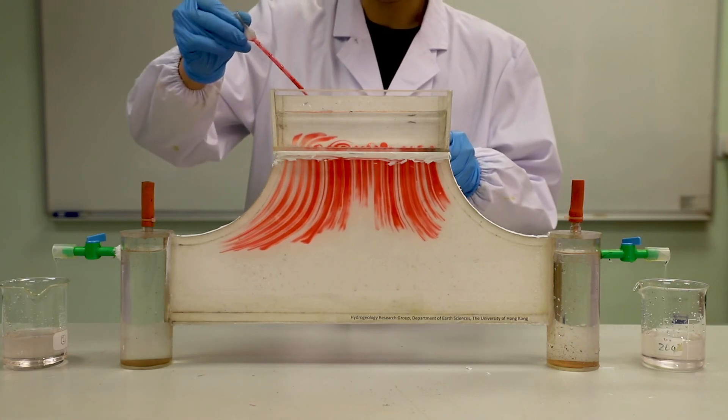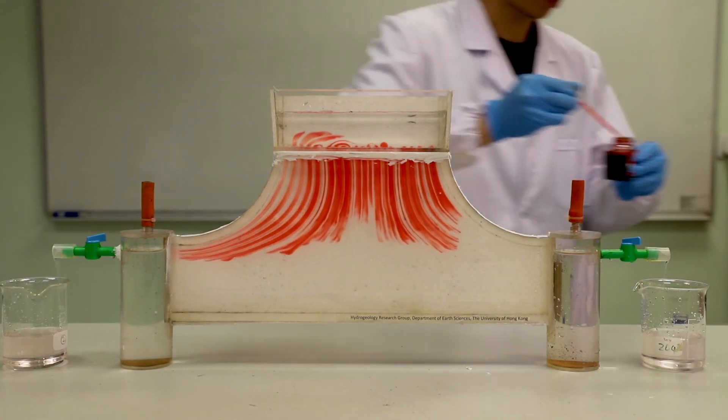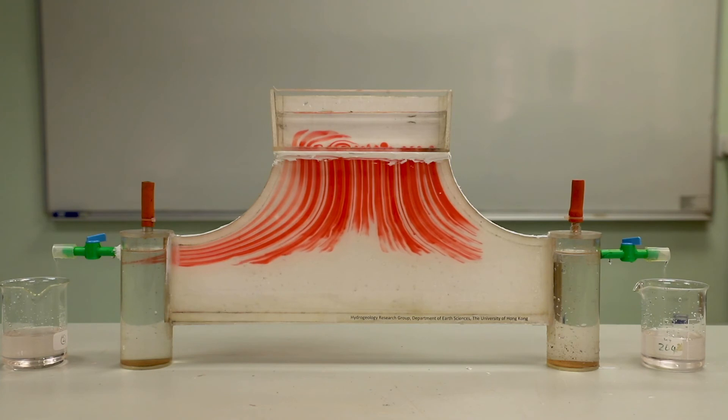We can tell the difference in flow rate to the left and right is not large because the groundwater divide develops close to the midway point between the reservoirs.